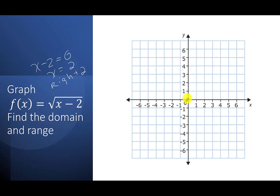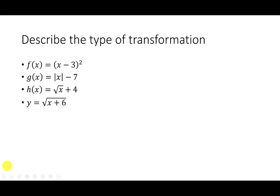My original square root function starts at (0,0), goes through (1,1) and (4,2). Moving right 2: (0,0) → (2,0), (1,1) → (3,1), (4,2) → (6,2). Connect and you see it shifted right. Now let's just identify transformations: (x − 3)² goes right 3. |x| − 7 goes down 7. √x + 4 goes up 4. √(x + 6) goes left 6. We just need to look at the function notation and know what the function will do.